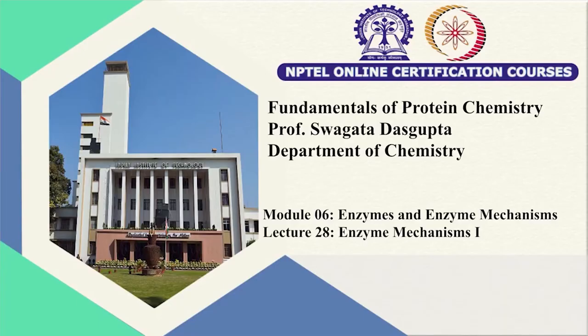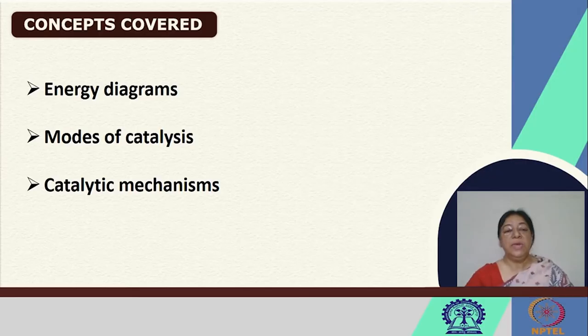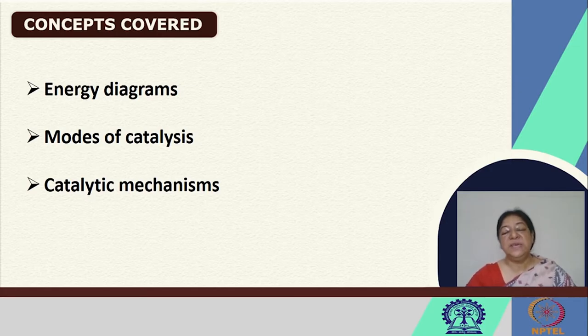In continuation of our discussion on enzymes, in the previous two lectures we looked at the specific enzyme classes and the geometric and chemical complementarity required for an enzyme-substrate complex to form. We realize that this is important in the recognition for an enzyme reaction to proceed. In this lecture, we will be looking at energy diagrams, the different modes of catalysis, and specific catalytic mechanisms in the subsequent two lectures.